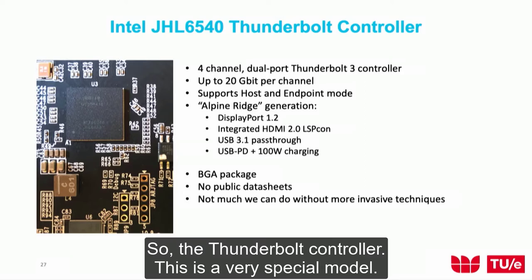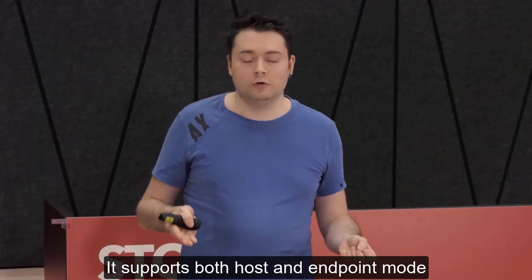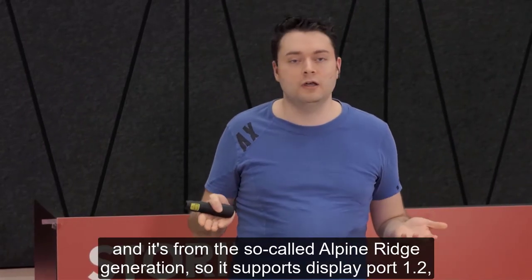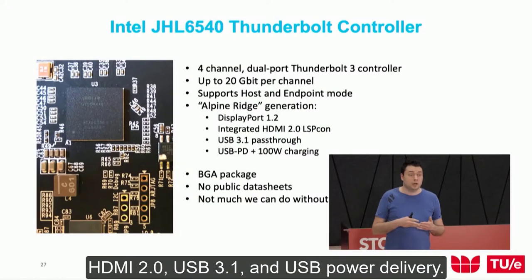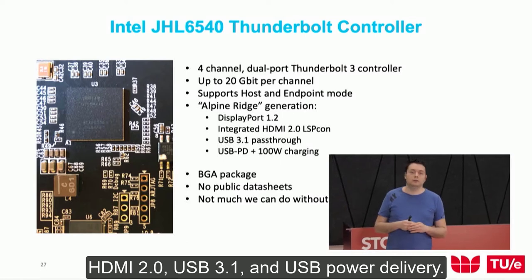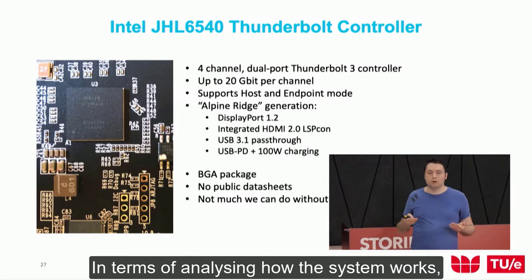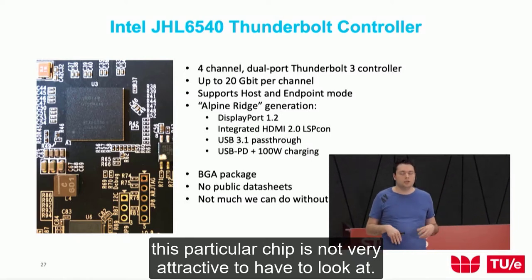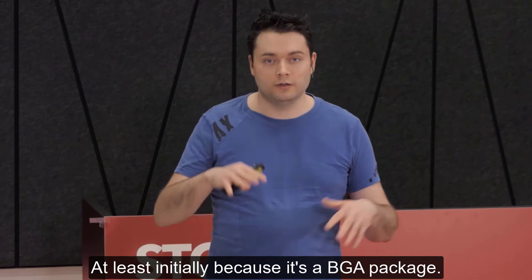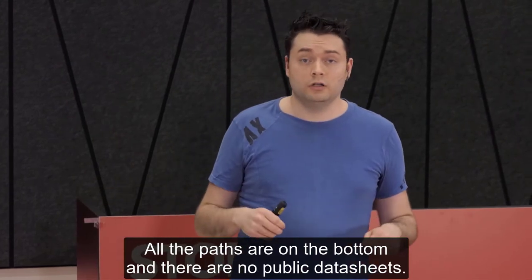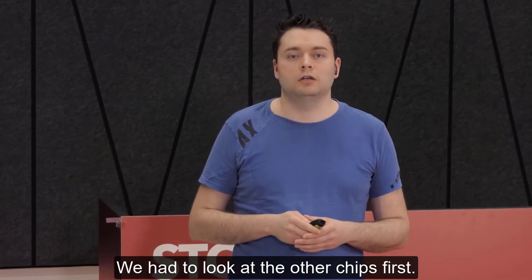The Thunderbolt controller is a special model supporting both host and endpoint mode from the Alpine Ridge generation, supporting DisplayPort 1.2, HDMI 2.0, USB 3.1, and USB power delivery. Analyzing this chip is not initially very attractive because it's a BGA package — all the pads are on the bottom — and there are no public data sheets. So we had a look at the other chips first, starting with the TPS, which has a public data sheet and can be talked to over I2C.